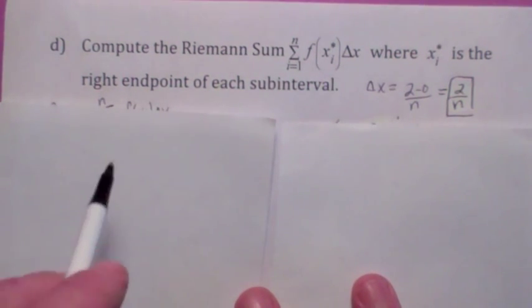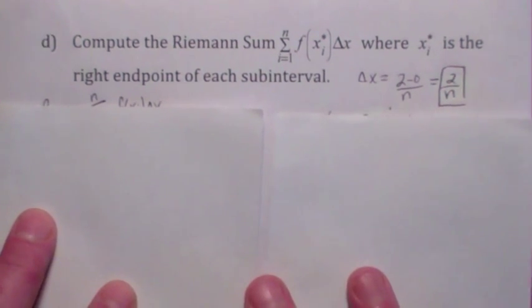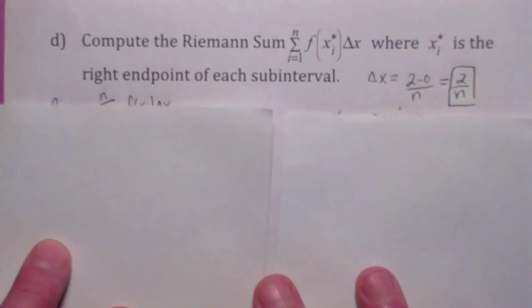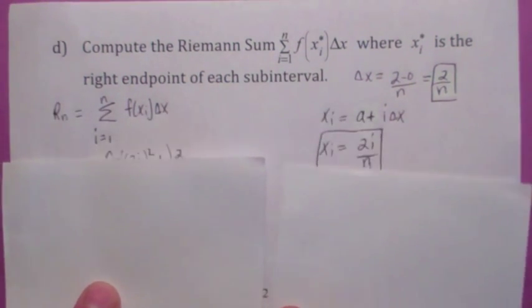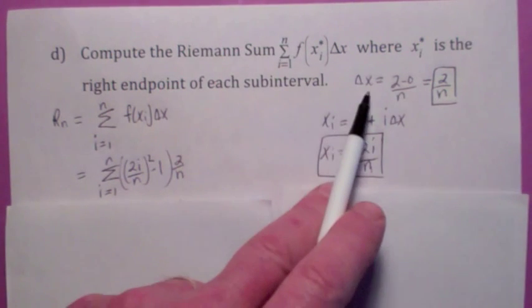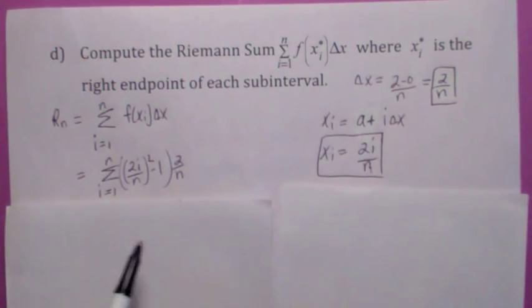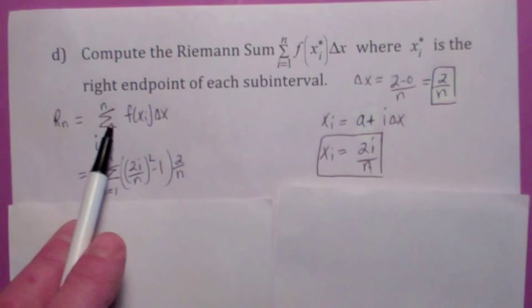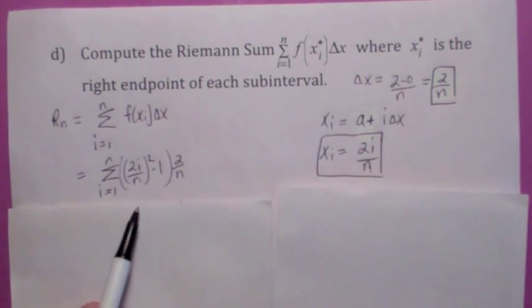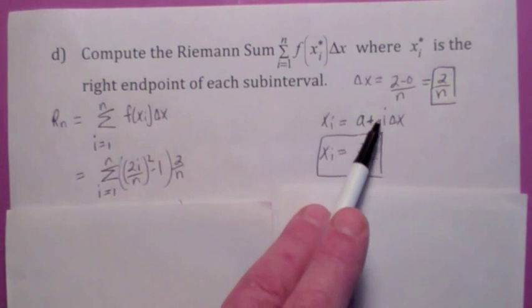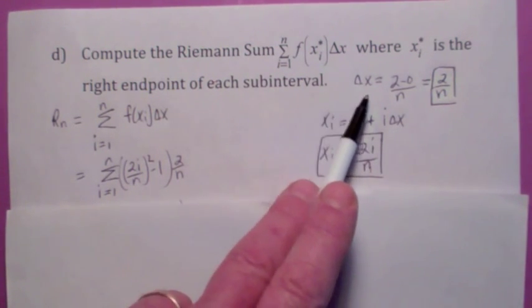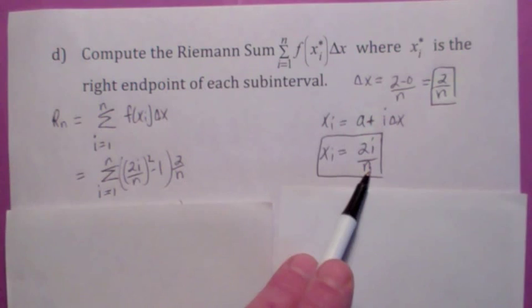All right, let's form the Riemann sum for i equals 1 to n now. Our answer is going to be in terms of n, where x_i* is the right endpoint of each subinterval. Okay, so here we go. Delta x is b minus a over n, which is 2 over n. So we want to find R_n, which is this. What is x_i? x_i, if you use right endpoints, is always a plus i delta x. So since a is 0, this just becomes 2i over n. It's really important that you're able to do that. Plug that in for x_i.